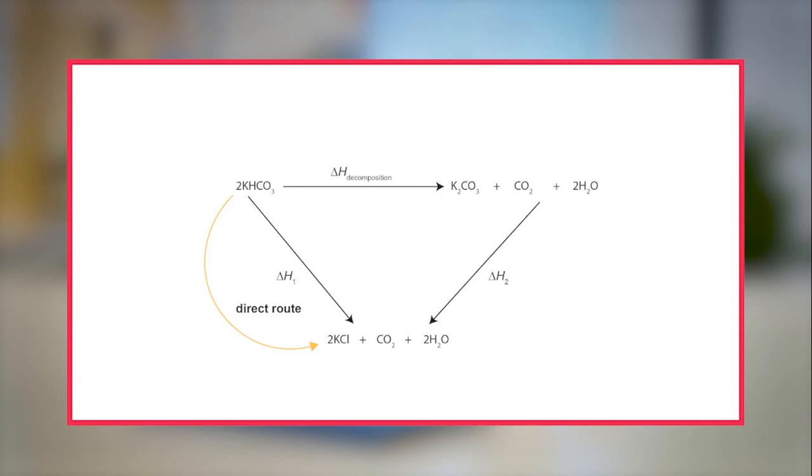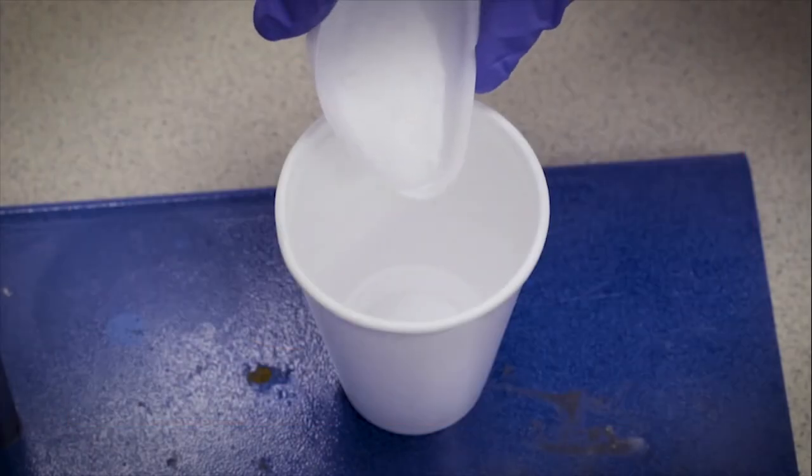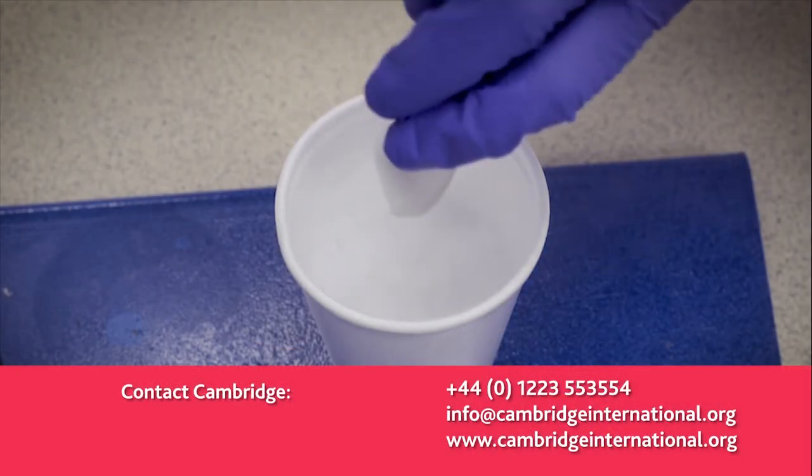Hess's law states that the total enthalpy change in a chemical reaction is independent of the route by which the chemical reaction takes place, as long as the initial and final conditions are the same.